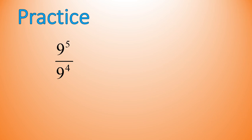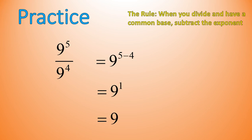Let's practice. I have 9 to the power of 5 divided by 9 to the power of 4. Pause the video and solve that. The way I'm going to write this is: base number 9, then the exponent from the numerator, 5, subtracting the exponent from the denominator — so 5 minus 4. That leaves me with 1. 9 to the power of 1 is 9. The rule is: when you divide with a common base, subtract the exponents and keep the base the same. You could also expand 9 to the power of 5, expand 9 to the power of 4, do the division, and you'll still get 9 as your solution.